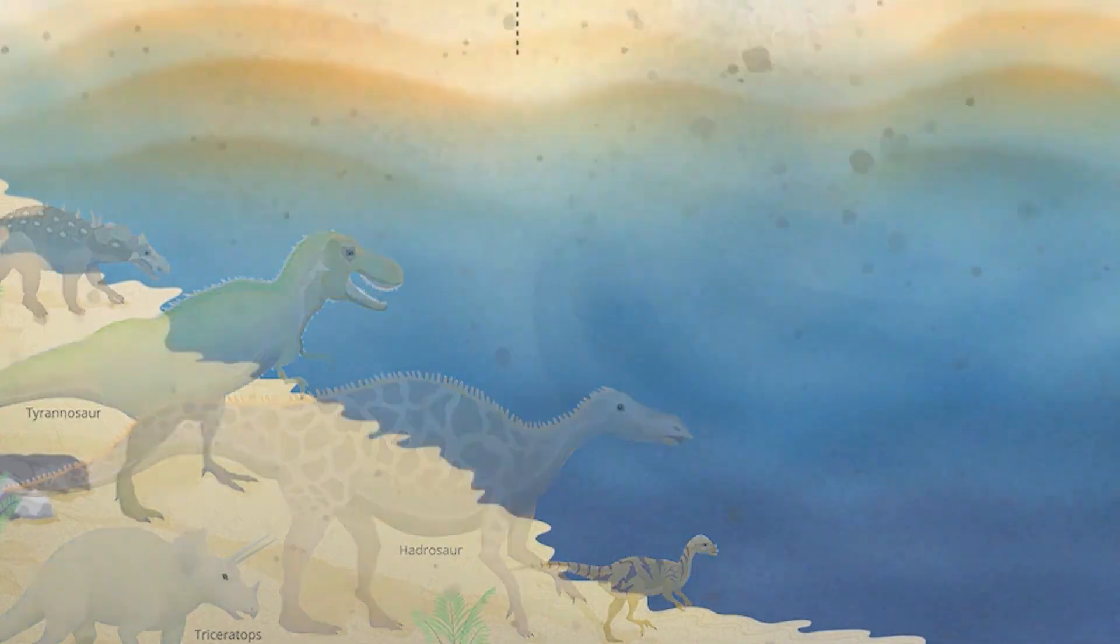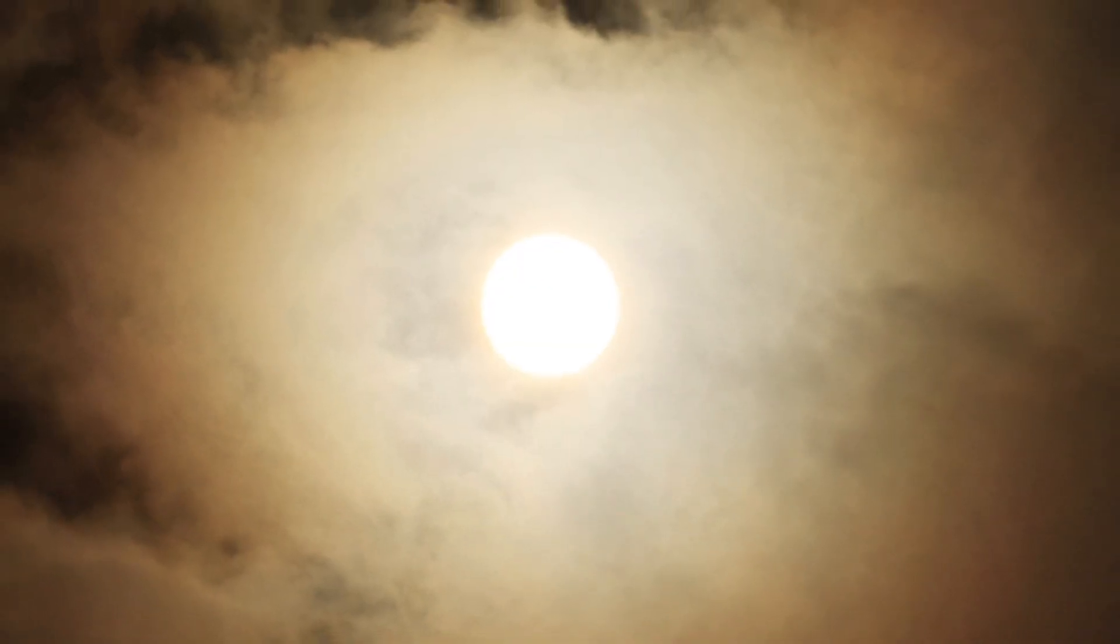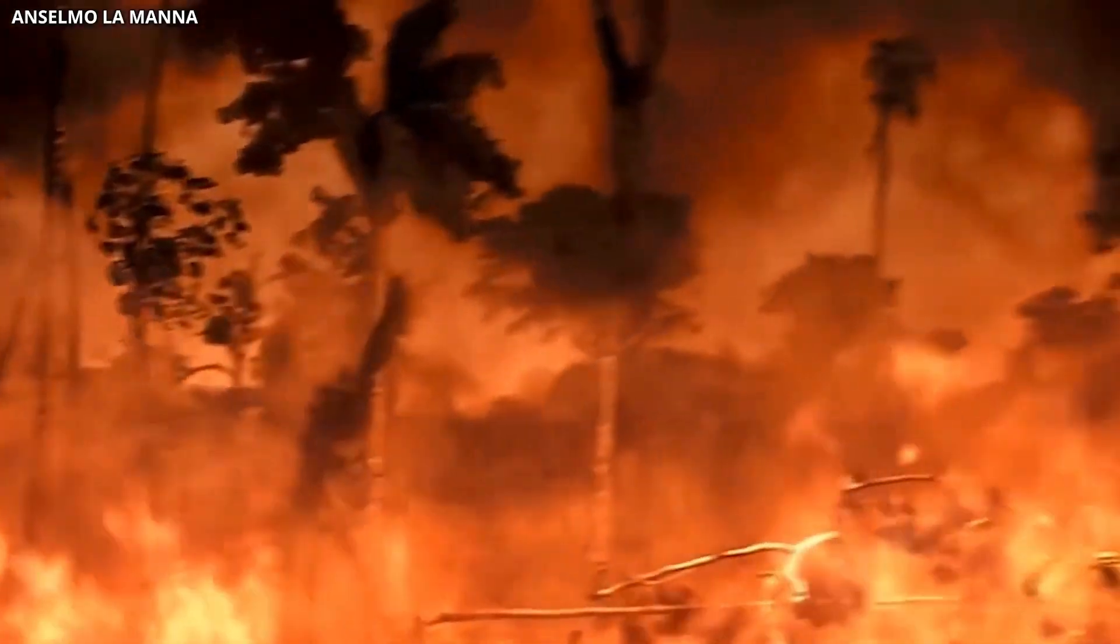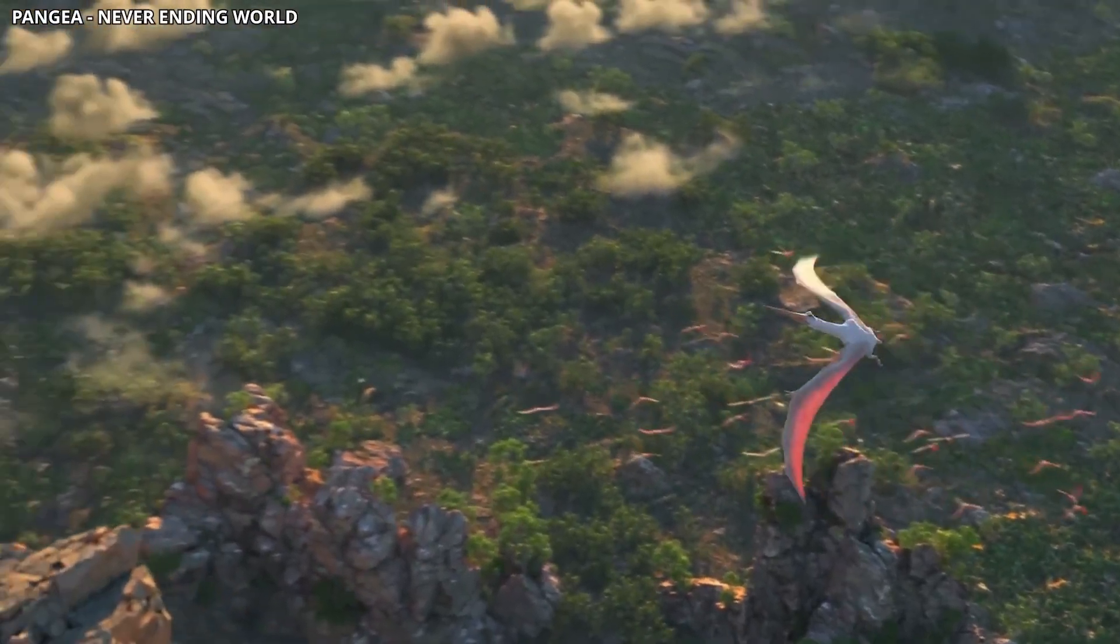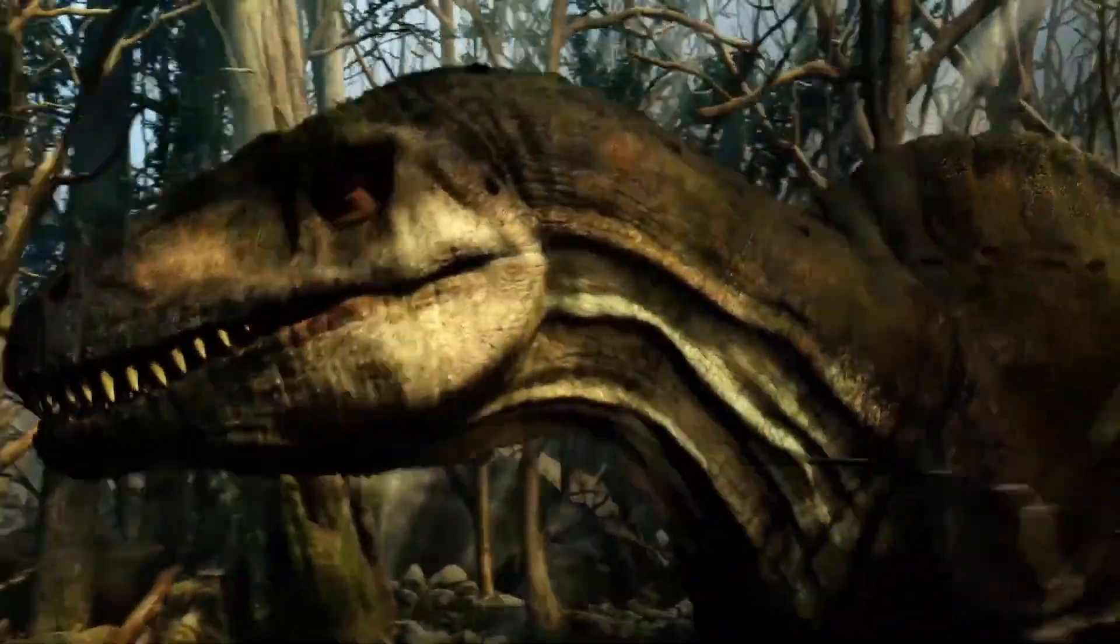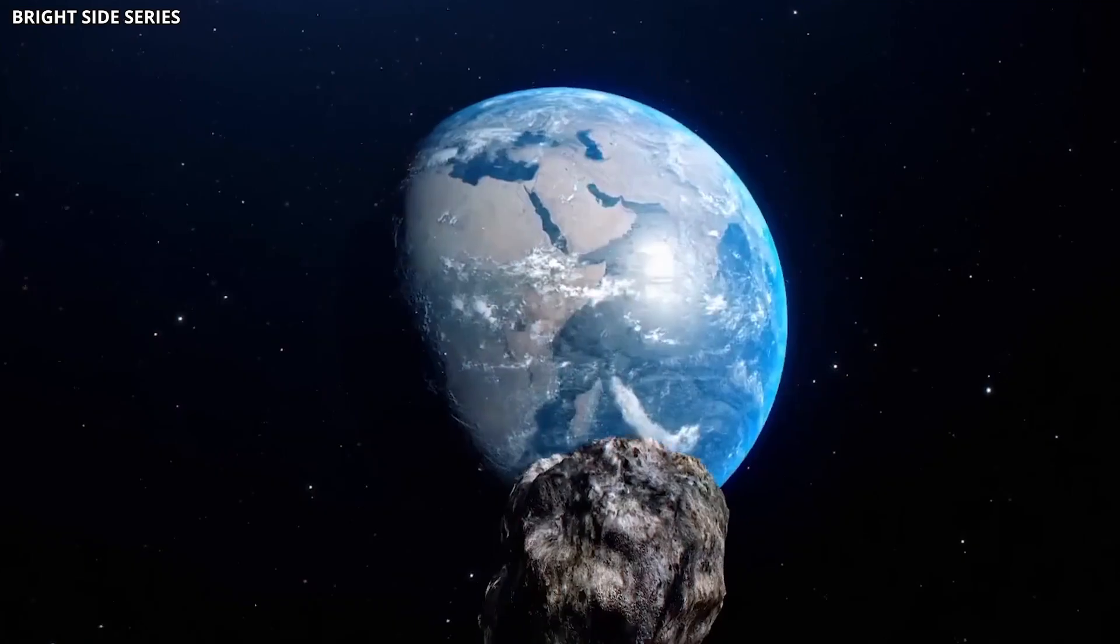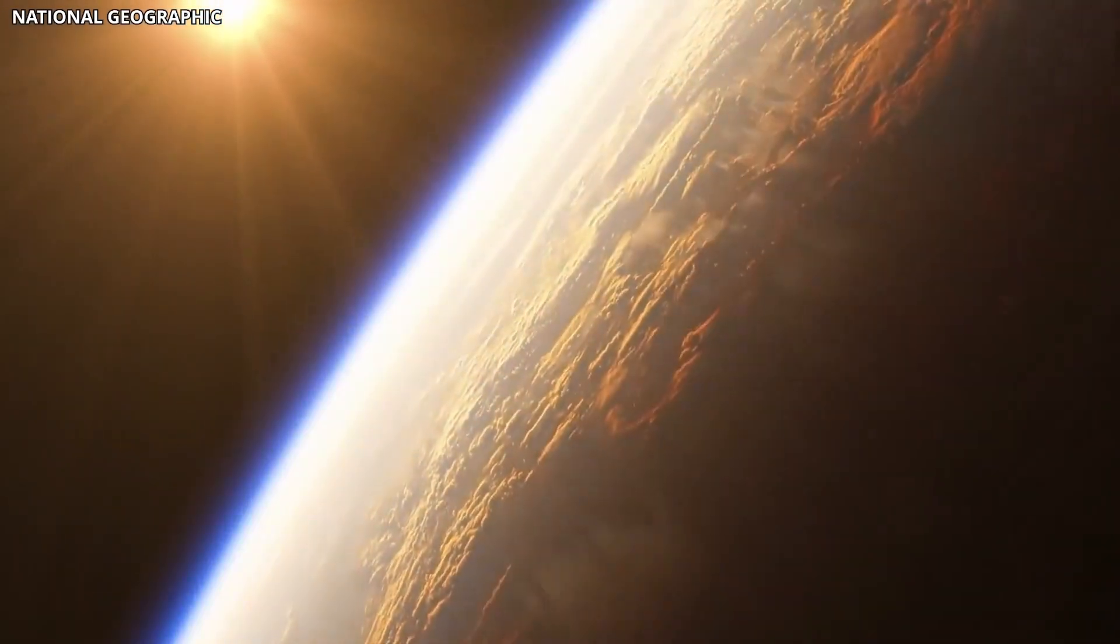It sent massive plumes of sulfur and fine dust into the atmosphere, blocking out the sun and triggering an impact winter. The temperature dropped dramatically, causing plant life to die off, and ecosystems around the globe collapsed. This environmental disaster led to the extinction of about 75% of life on Earth, including the dinosaurs who had been the dominant life form for over 200 million years. The impact wiped out many species. However, recent studies show that a massive meteorite can do more than just destroy ecosystems.